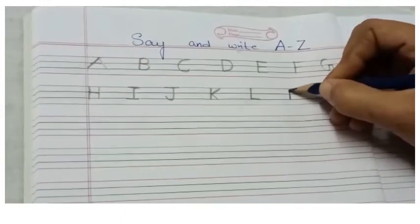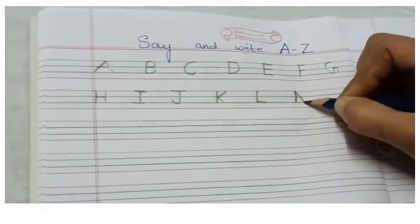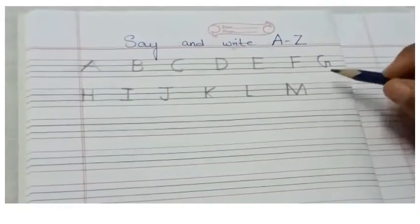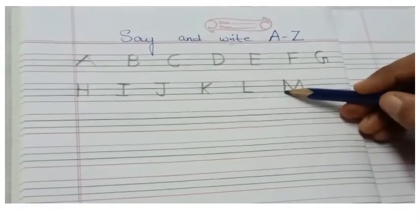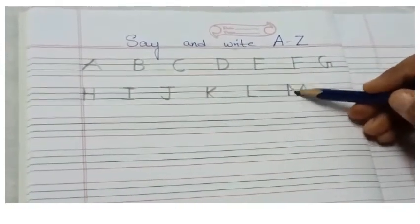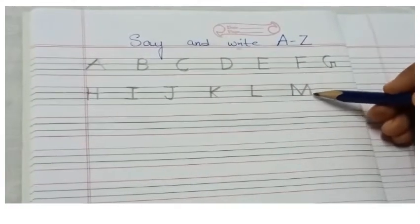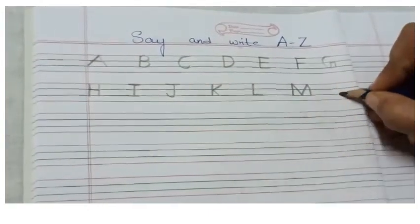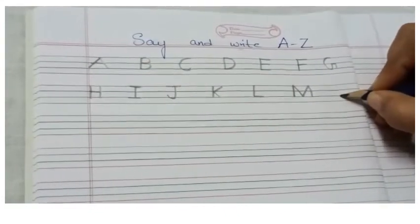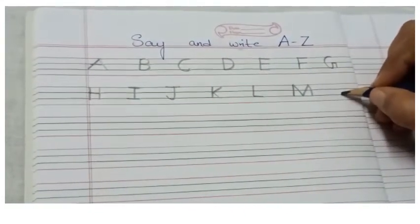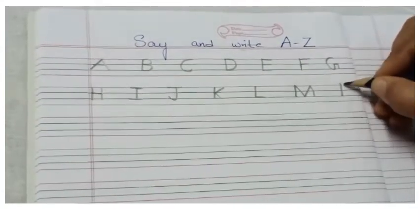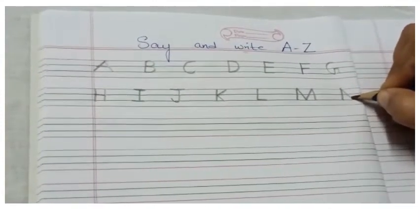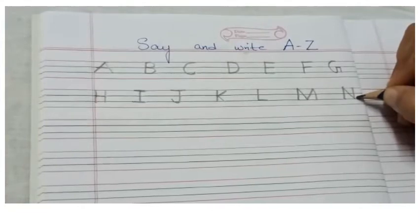We are going to write capital letter M starting from the black line. Draw a standing line, slanting line, slanting line and a standing line again — capital letter M. Give one finger space, we are going to write capital letter N. Again we will be starting from this third line — standing line, from there a slanting line, again a standing line — capital letter N.